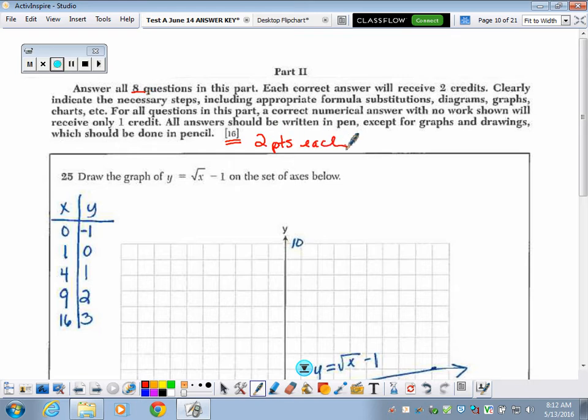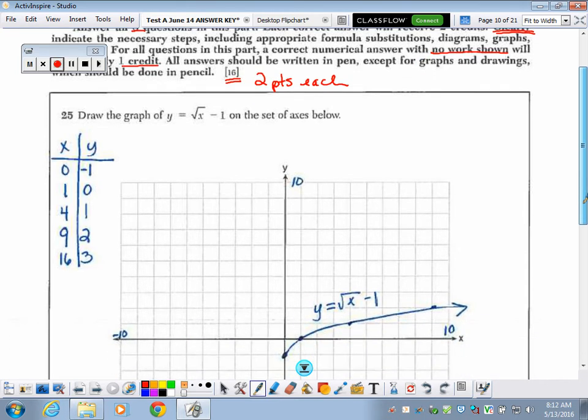Each correct answer will receive two points. Clearly indicate the necessary steps, including appropriate formulas, substitutions, diagrams, graphs, charts, etc. For all questions in this part, a correct numerical answer with no work shown will receive half credit of one point. All answers should be written in pen, except for your graphs and drawings, which should be done in pencil.